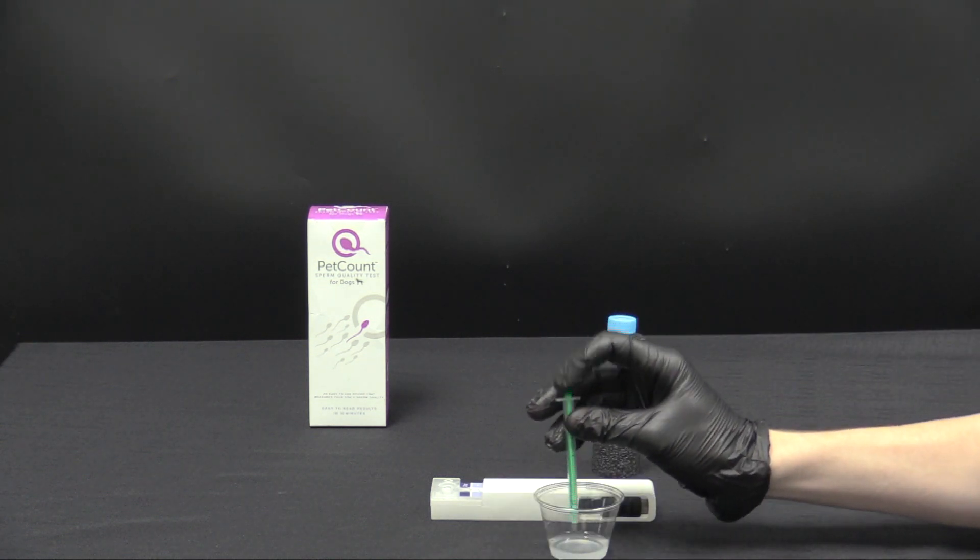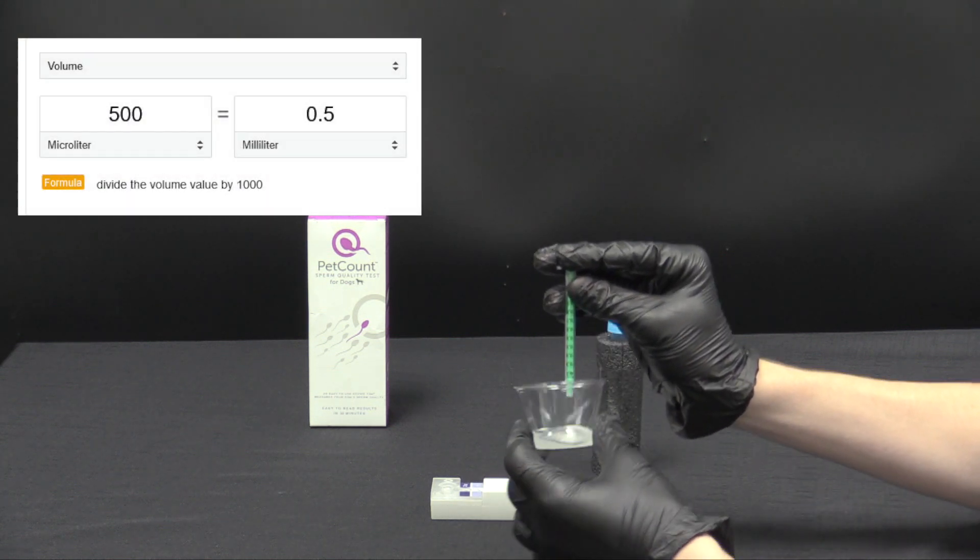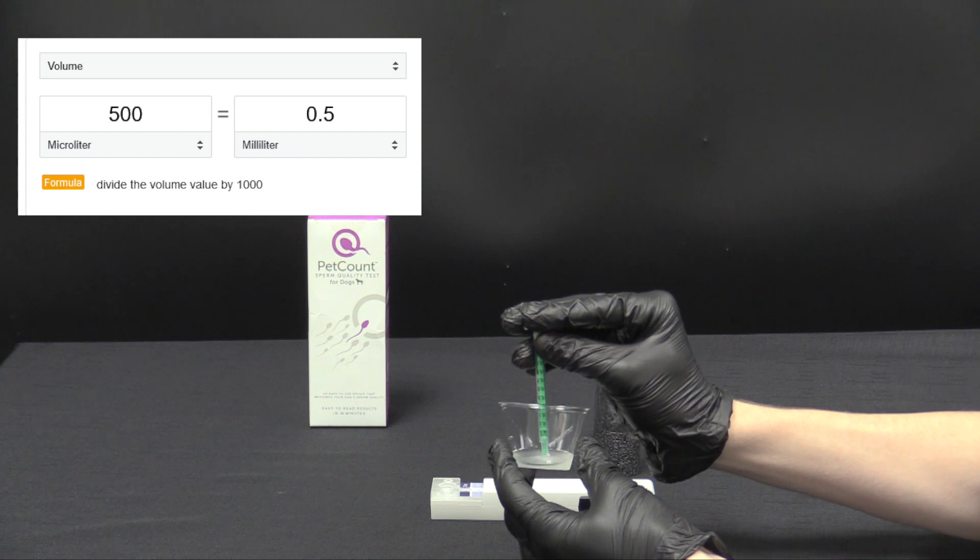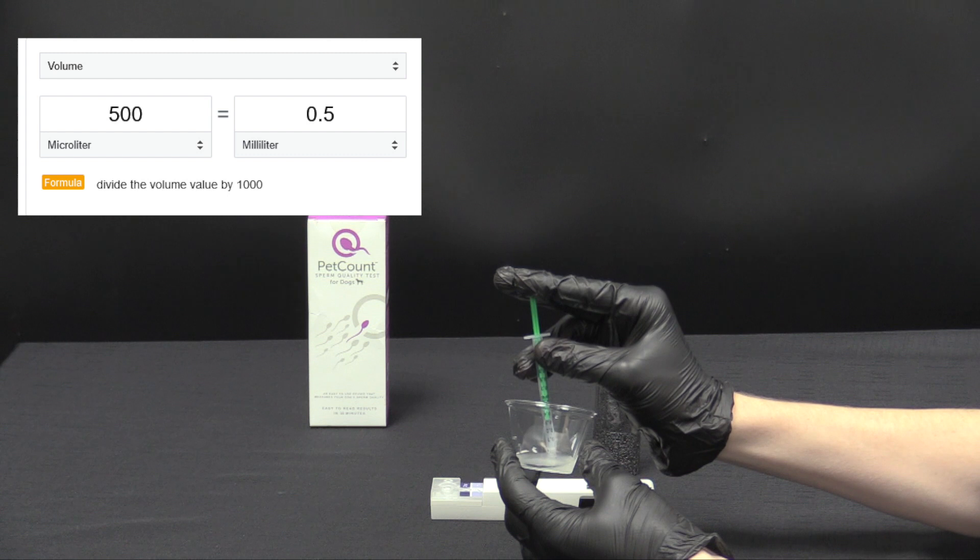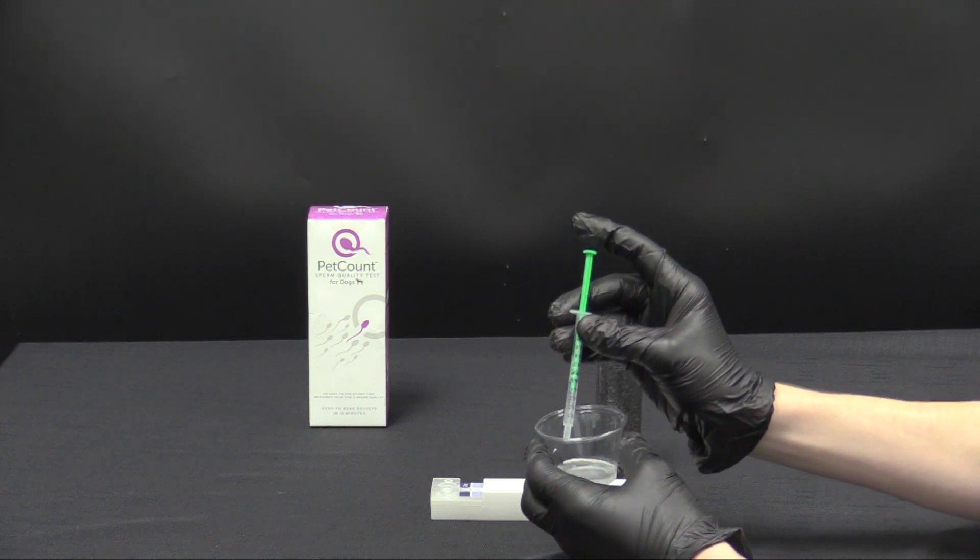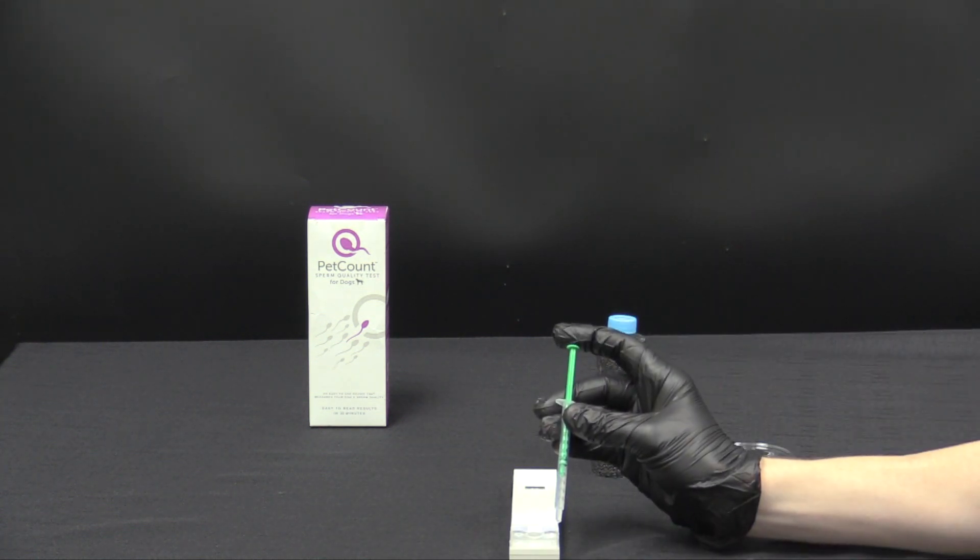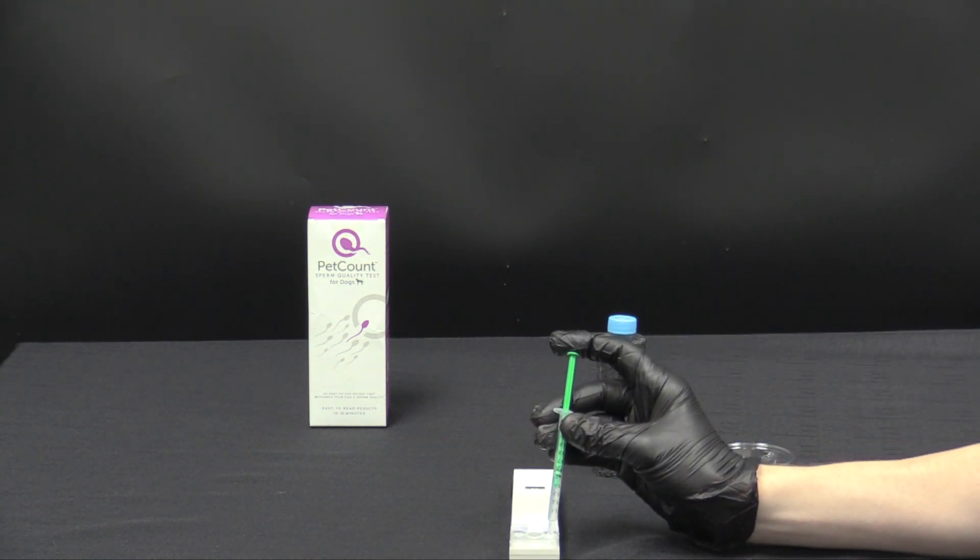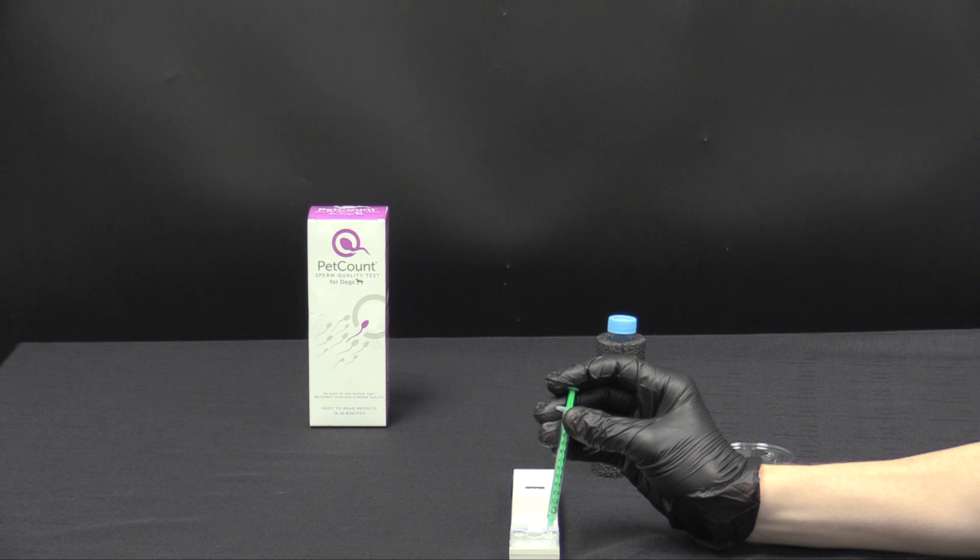All right now we'll pull up the 500 microliters or 0.5 cc's of sperm. Then we'll carefully deposit into the sample well.